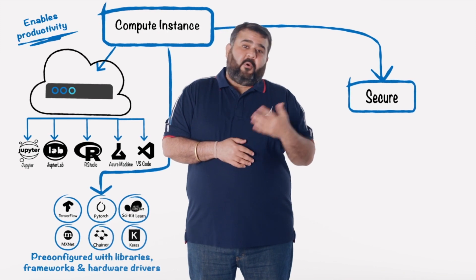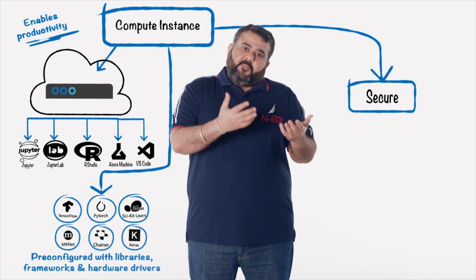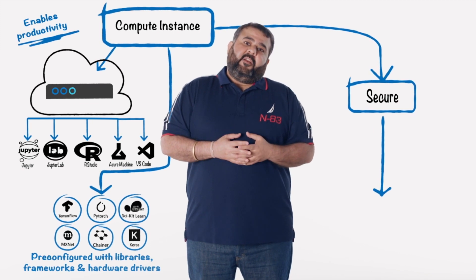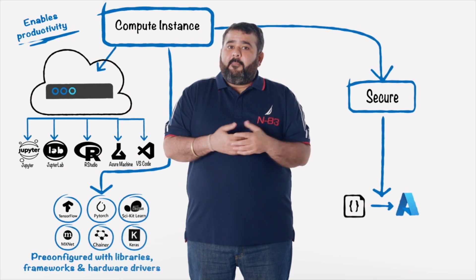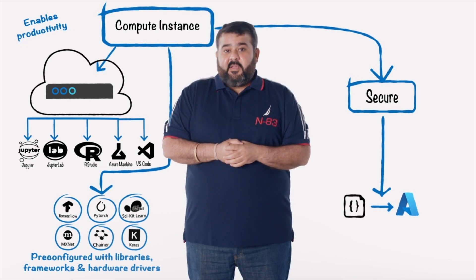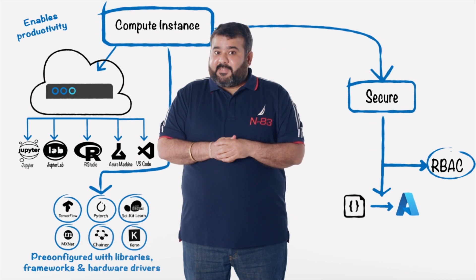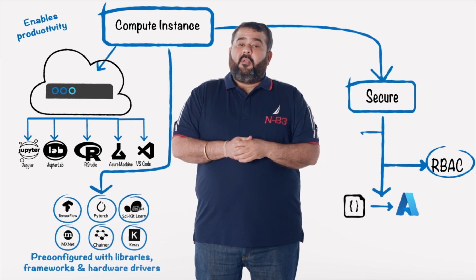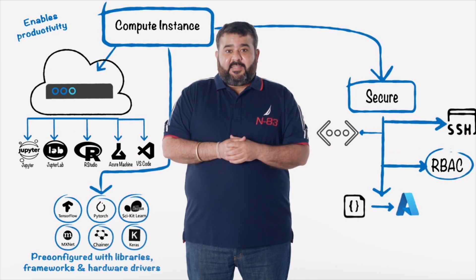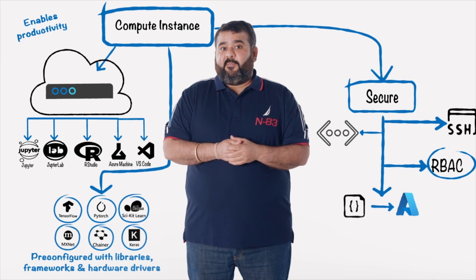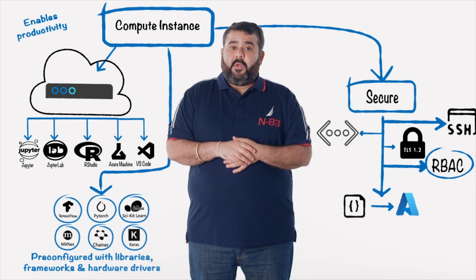Third, these are secure. Compute instances provide robust management policies and secure networking configurations, such as you can auto-provision these from ARM templates and Azure Machine Learning SDK. You can bring them under Azure Role-Based Access Control. You can enable virtual networks for these. You also have SSH policy to enable or disable SSH access, and these come with TLS 1.2 enabled.